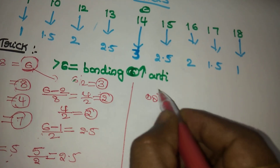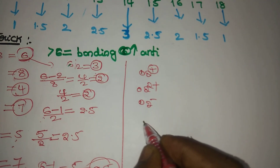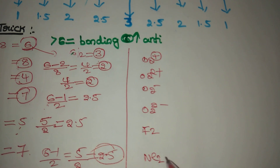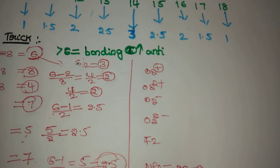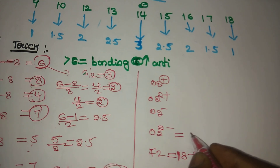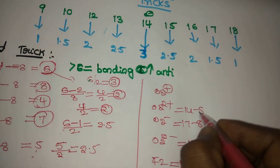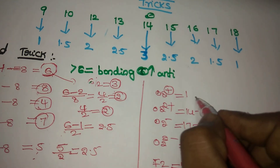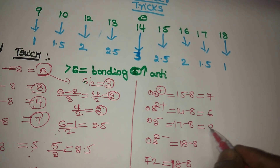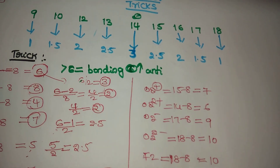More examples: O2+ (15 electrons), O2 (16 electrons), O2− (17 electrons), O2²− (18 electrons), F2 (18 electrons), Ne2 (20 electrons — bond order 0). For O2²−: 18−8=10. For O2−: 17−8=9. For O2+: 15−8=7. For O2: 16−8=8. Count and subtract from 8 to get: 7, 8, 9, 10, 12.